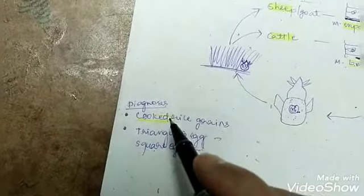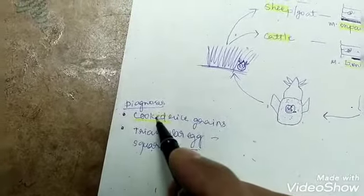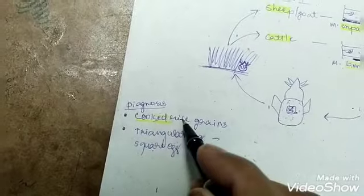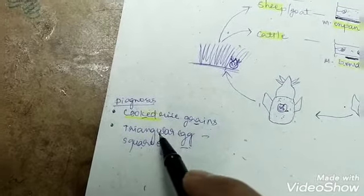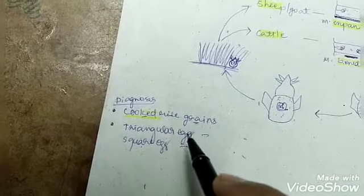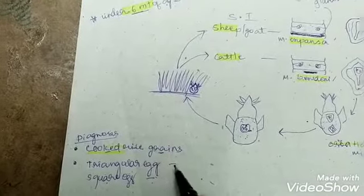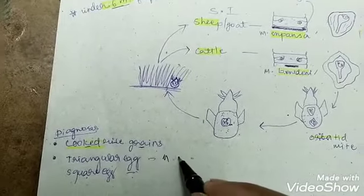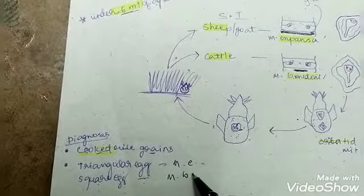The diagnosis is: the proglotids of the Moniezia species look like cooked rice grains in the feces. And based on the egg, we can identify Moniezia expansa and Moniezia benedeni. Triangular eggs in case of Moniezia expansa, and roughly square in case of Moniezia benedeni.